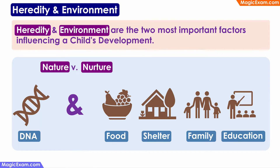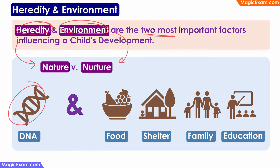The first step is to understand what heredity and environment are. We have already spoken about this in one of the previous videos, but heredity and environment are the two most important factors that influence a child's development, because they will affect all types of development in a child. Heredity is nothing but nature, and environment is nothing but nurture. Heredity refers to all those attributes that we inherit from our parents through our genes or DNA.